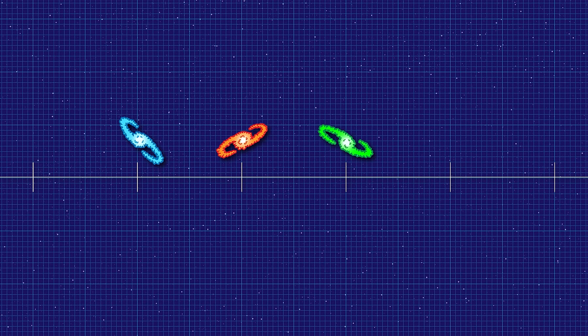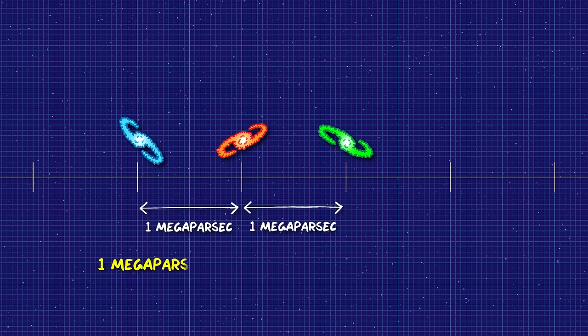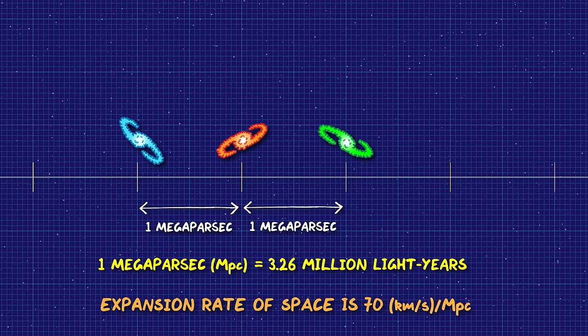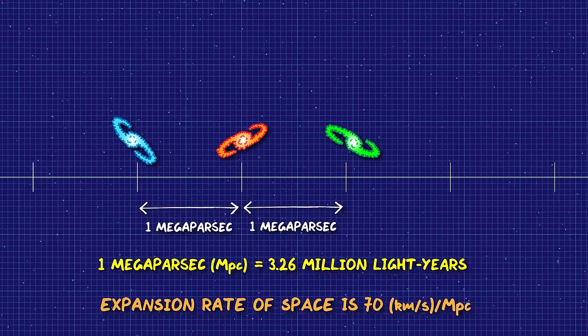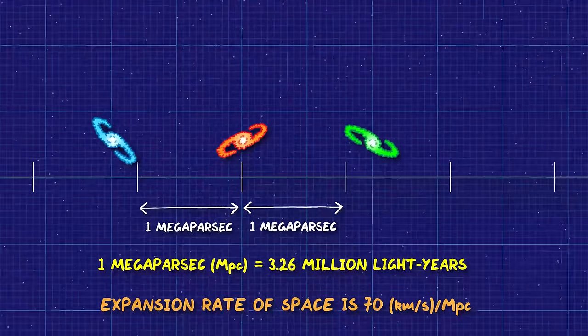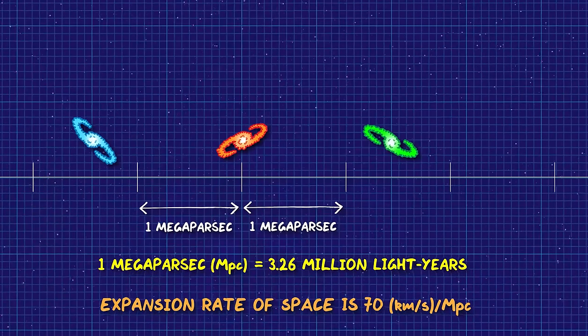We're the galaxy in the middle, and we look at two galaxies that are exactly one megaparsec away in each direction. A megaparsec is about 3.26 million light-years. According to the measurements of astrophysicists, space is expanding by roughly 70 kilometres per second per megaparsec. So these other galaxies are moving away from us at 70 kilometres per second just from the expansion of space.